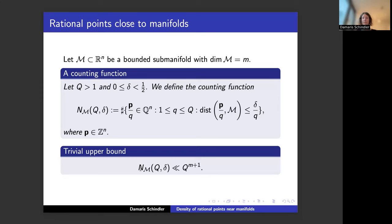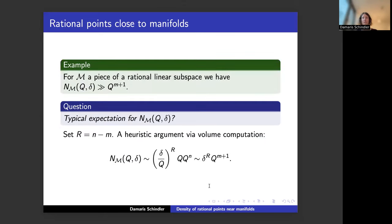There is a trivial upper bound of Q^{m+1}. For example, in R^1 the fractions p/q between 0 and 1 with denominator up to Q number about Q^2, matching Q^{1+1}. This trivial bound is sometimes realized for rational linear subspaces — an interval on a rational line has exactly Q^2 rational points — but this is not the typical case.